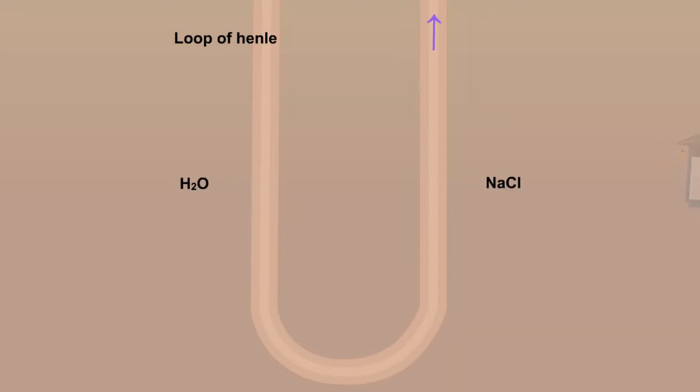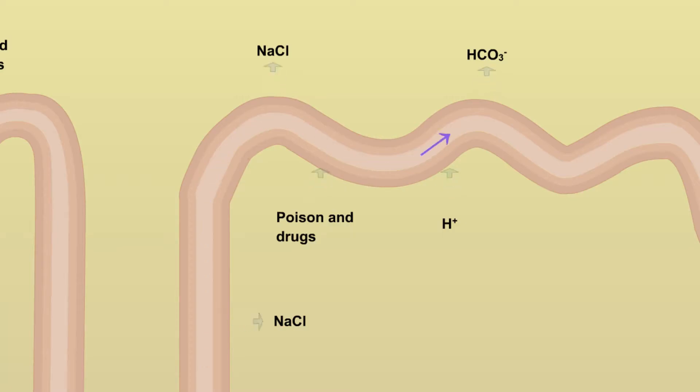Then, the urine flow declines, following the vessel and gets in the loop of Henle, where there is reabsorption of water and sodium chloride.